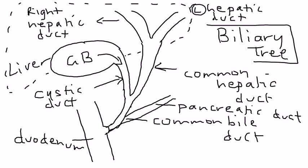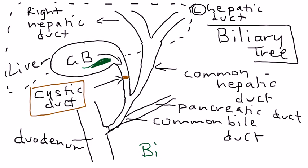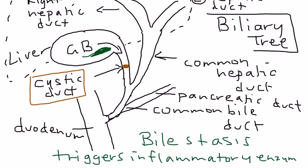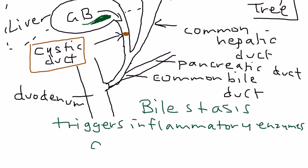Cholecystitis occurs when there is a stone in the cystic duct. That stone blocks the outflow of bile — bile is green — and when bile is not able to flow outward, you get bile stasis, meaning it stays in one place. That can trigger the release of enzymes that cause inflammation, and that is essentially how cholecystitis happens.